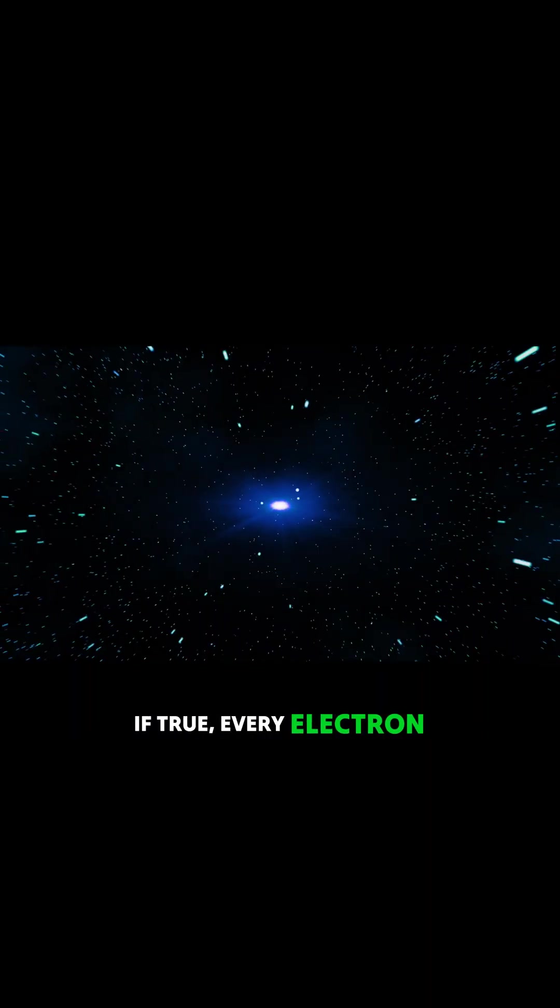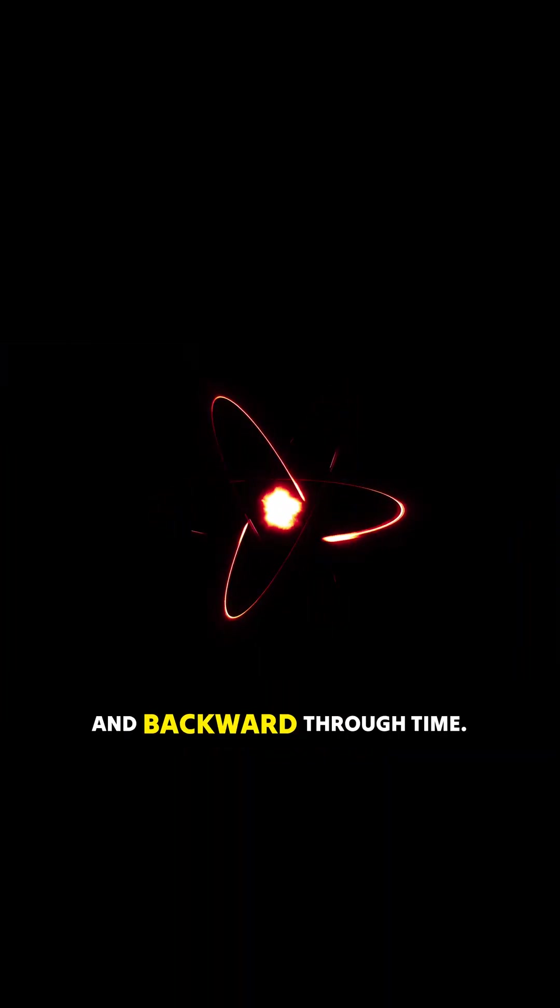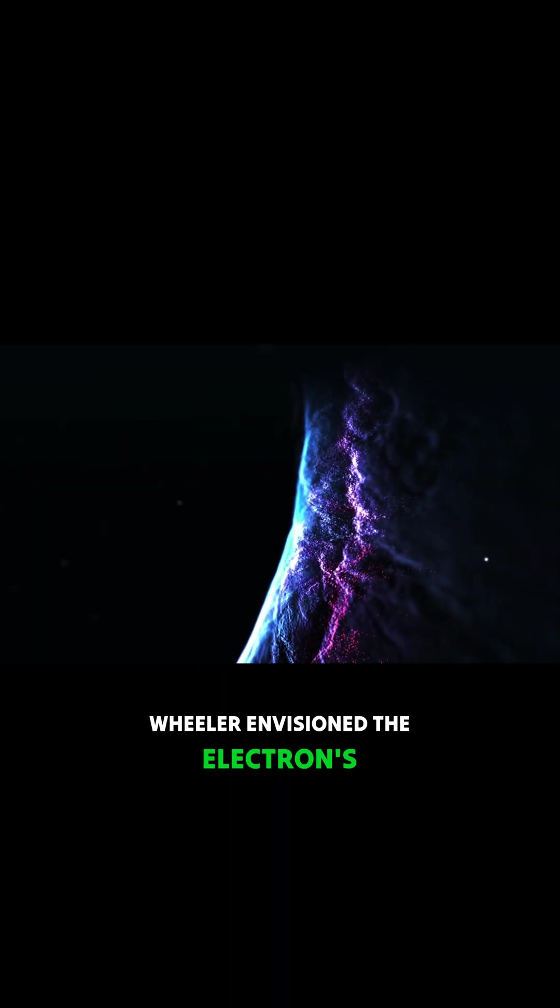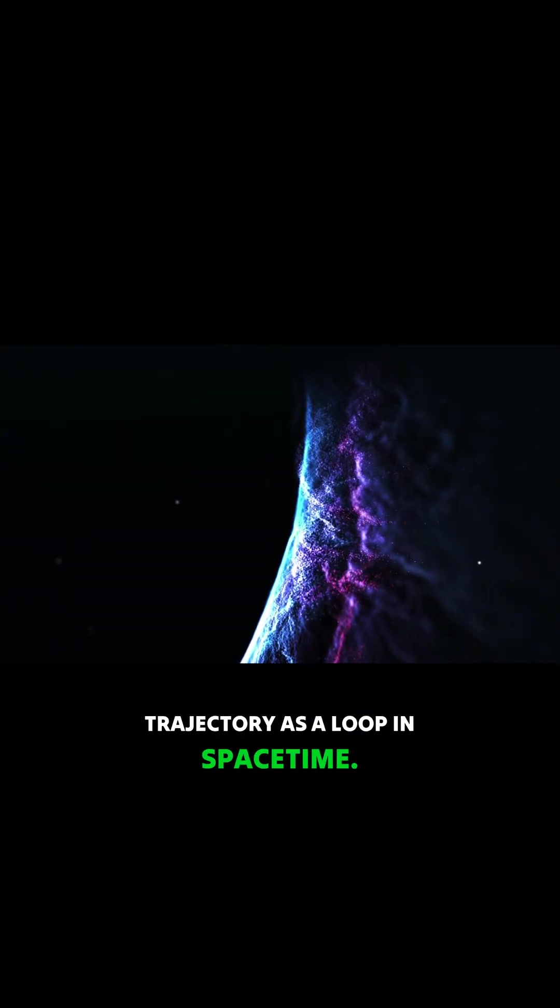If true, every electron in the universe could originate from the same singular entity, traveling forward and backward through time. Wheeler envisioned the electron's trajectory as a loop in space-time.